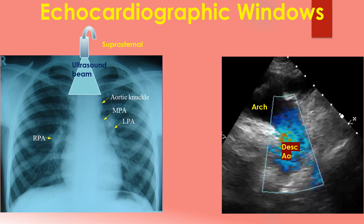The suprasternal view is useful in imaging the arch of the aorta and nearby regions of the ascending and descending aorta. Coarctation of the aorta and patent ductus arteriosus can be imaged in this view. The image shows the blue-coloured descending aortic flow on colour Doppler, and the gradient of coarctation can also be assessed in this view.